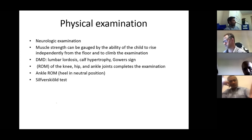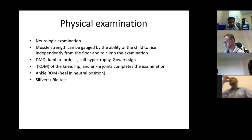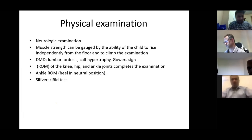In Duchenne muscular dystrophy, other signs include Gower's sign, lumbar lordosis, and calf hypertrophy. Range of movement of the hip, knee, and ankle joints is important. The most important test to perform during physical examination is the Silverskiold test — checking the range of dorsiflexion of the ankle with the knee extended and knee flexed while maintaining the ankle in a neutral position.